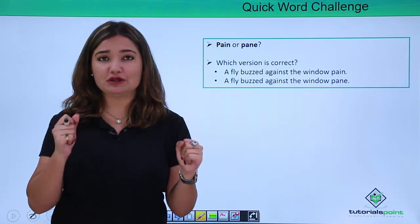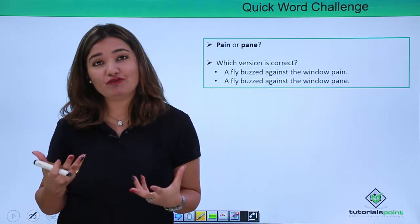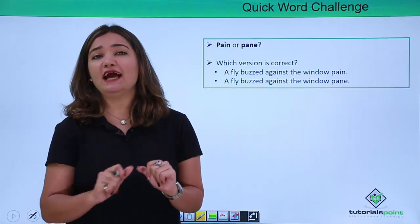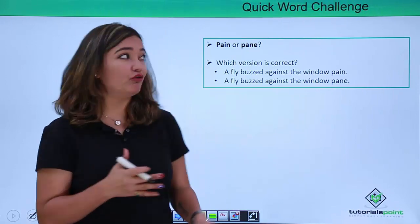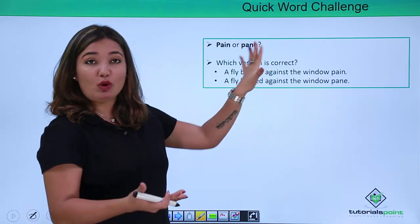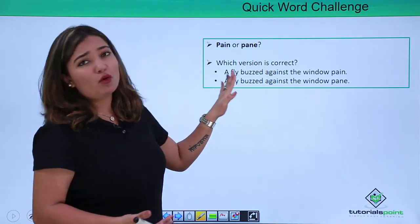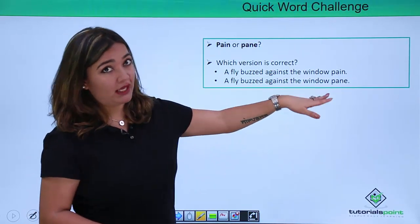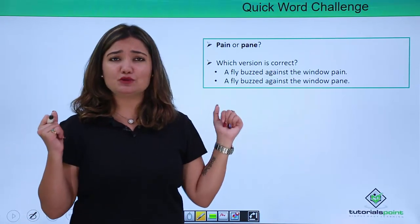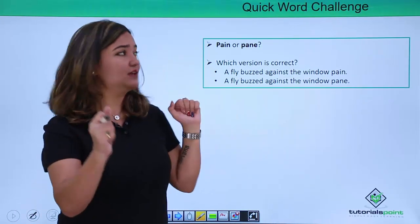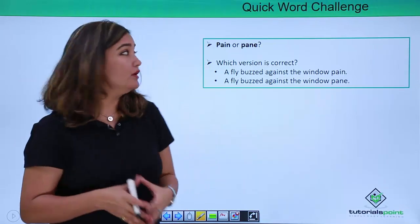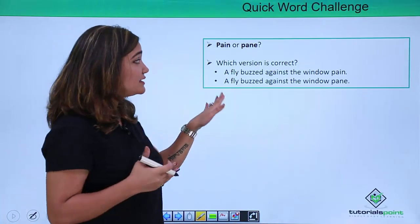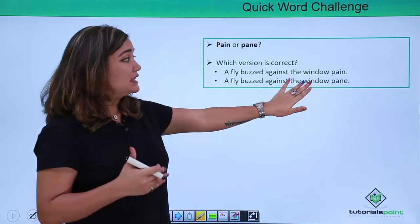So here we have two different words whose pronunciation is the same but the meanings are completely different, and commonly we end up confusing them both. Now let's see which word is the correct version to be used in context properly. So: 'pain' or 'pane' — which one are you gonna use? 'A fly buzzed against the window pane.' You're absolutely right — most of you have guessed it correctly. This 'pain' is the feeling we all know, and 'pane' is that glass slab in front of a window. So here, 'window pane' is the right option.